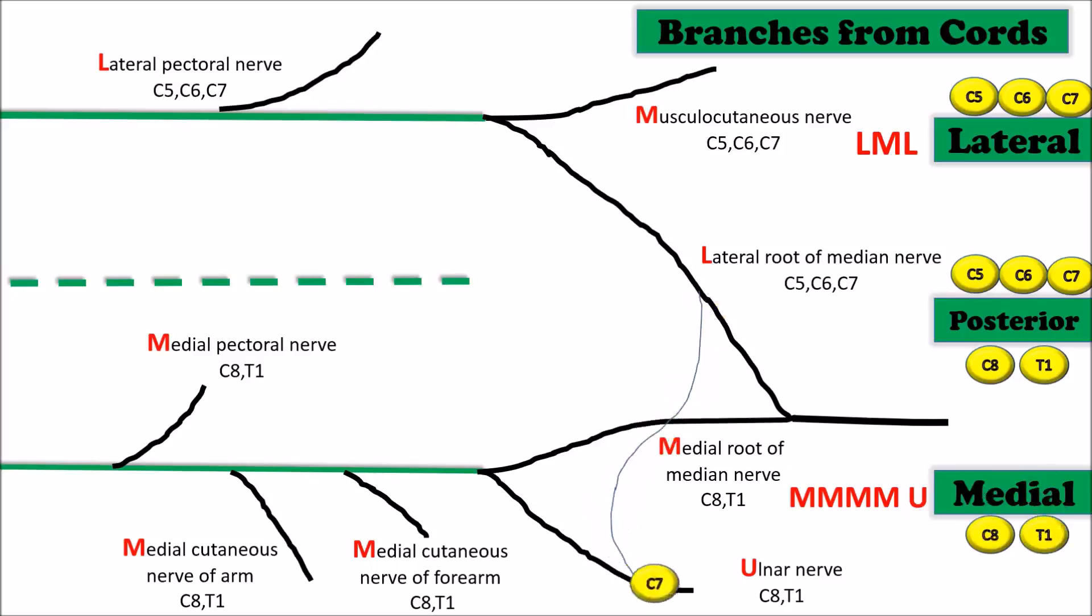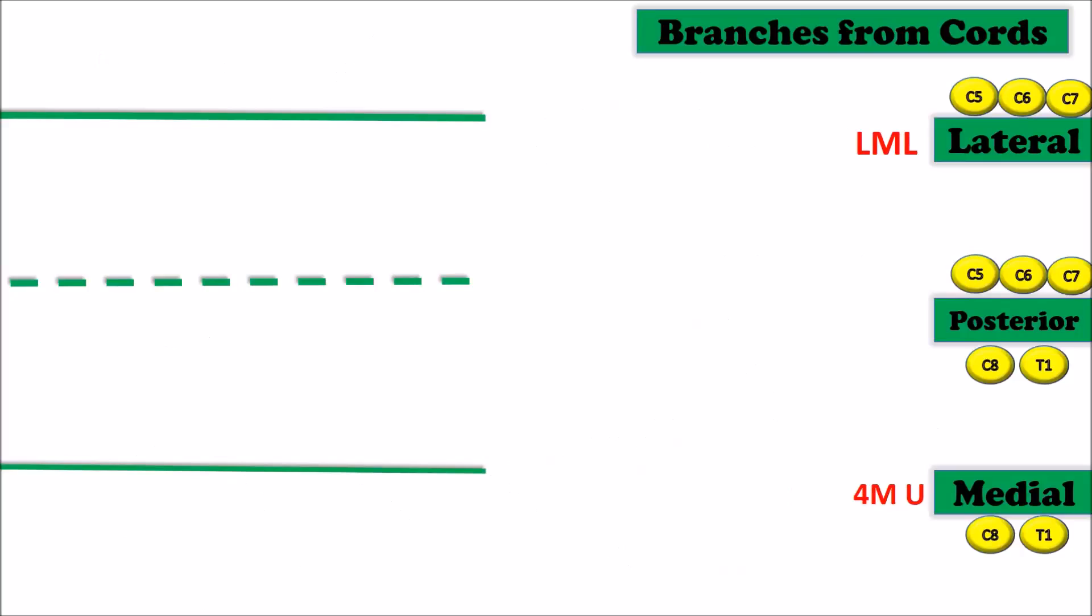Branches of the posterior cord can be remembered with a mnemonic ULNAR: upper subscapular nerve, lower subscapular nerve, nerve to latissimus dorsi.